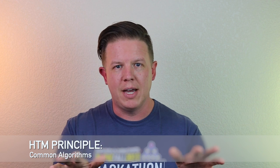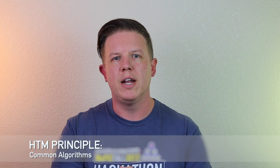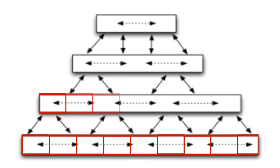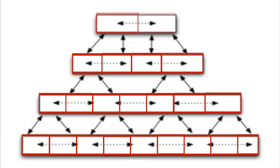It does the same types of functions and operations over that input no matter where it's coming from. Because each region is performing the same set of processes on the input data, that means the capabilities of the entire neocortical structure must be present within each region itself. Therefore, we can focus on how one region operates and how it interacts with its neighbors.